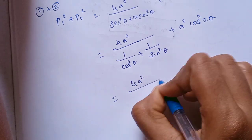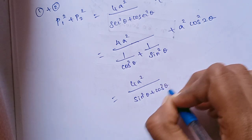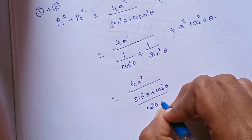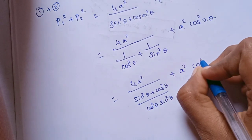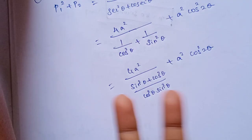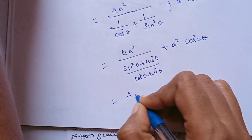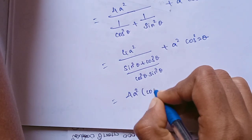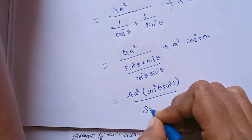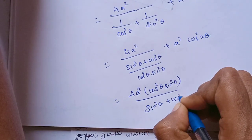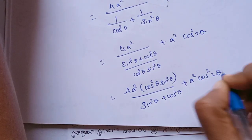Now computing P1² + P2², we get 4A²·sin²θ·cos²θ divided by (sin²θ + cos²θ) times cos²θ·sin²θ, plus A²·cos²2θ. Taking the reciprocal form: 4A²·cos²θ·sin²θ divided by (sin²θ + cos²θ) plus A²·cos²2θ.